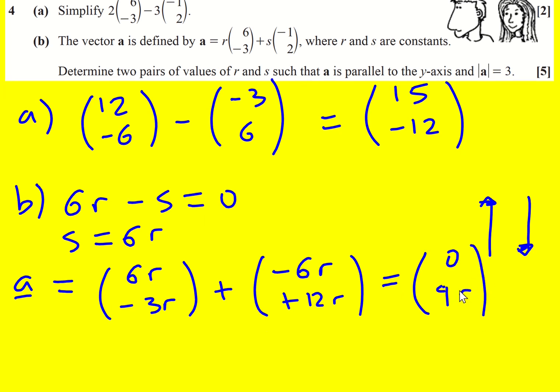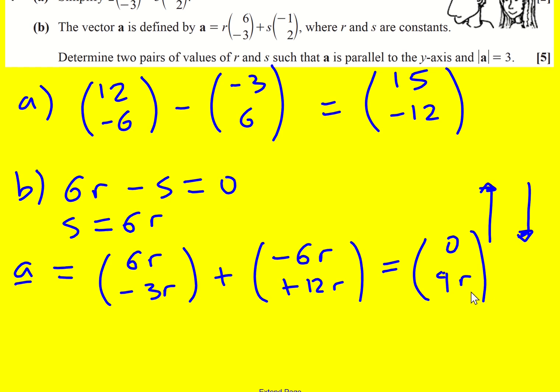So the magnitude of the vector is just 9r. So either 9r equals 3 or 9r equals -3, because it could go in either direction.